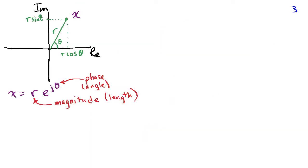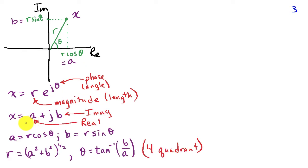In the previous slide, we had a point x that was unit distance from the origin. If I make that point a distance r from the origin and at an angle of theta, then my real part is r cosine theta, my imaginary part is r sine theta, and I can express x in polar coordinates as r e to the j theta, where r is the magnitude or the length of the vector from the origin to the point x, and theta is the angle or the phase of x with respect to the positive real axis.